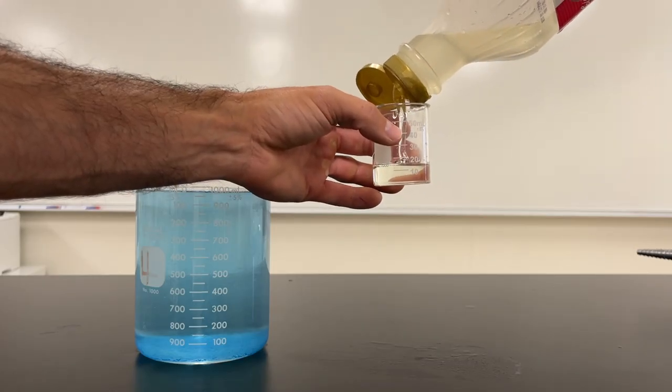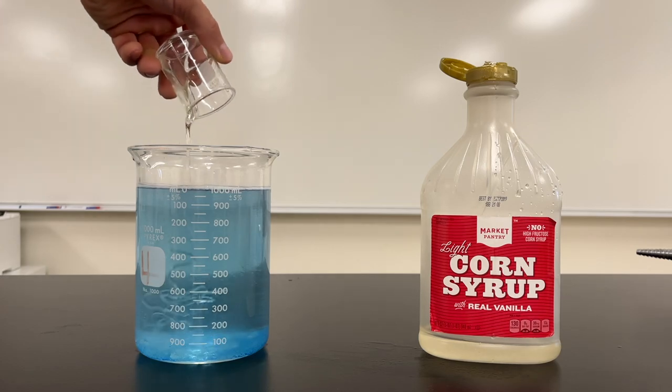After that, you need about 25 milliliters of corn syrup. You can just slowly pour that in.